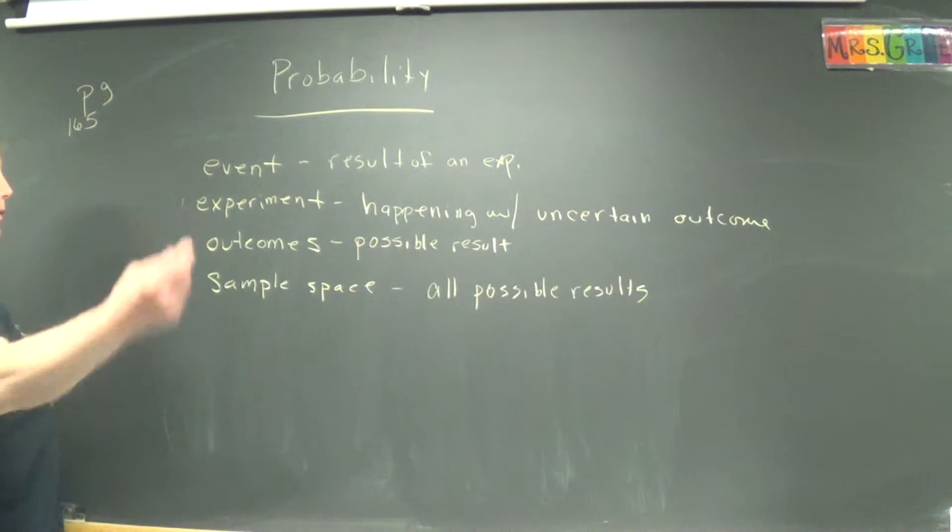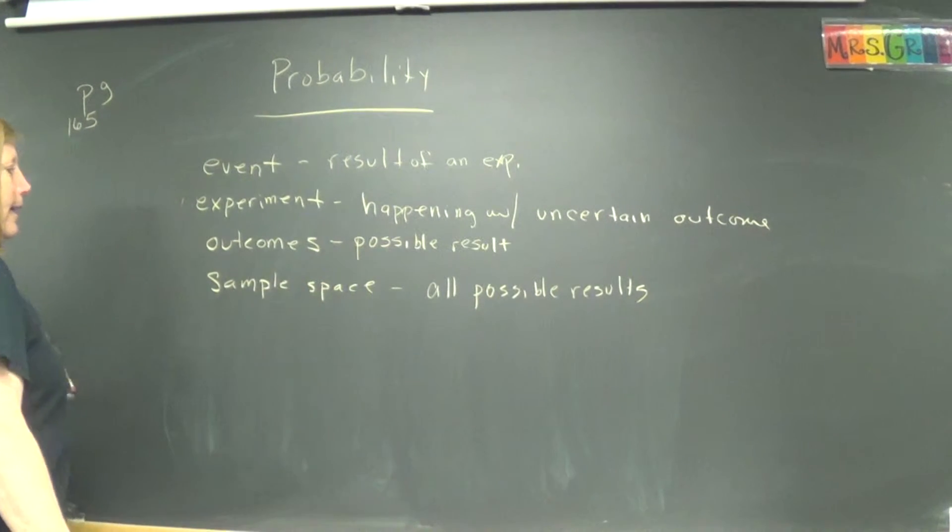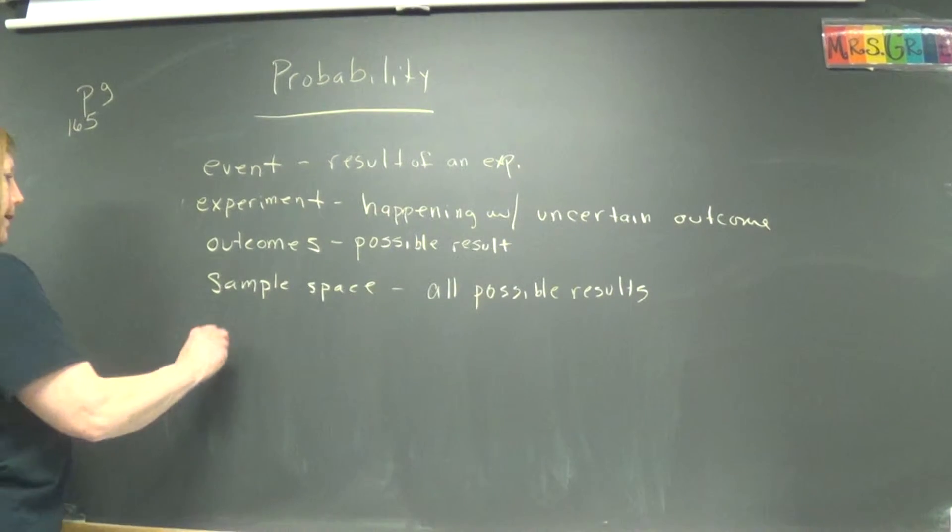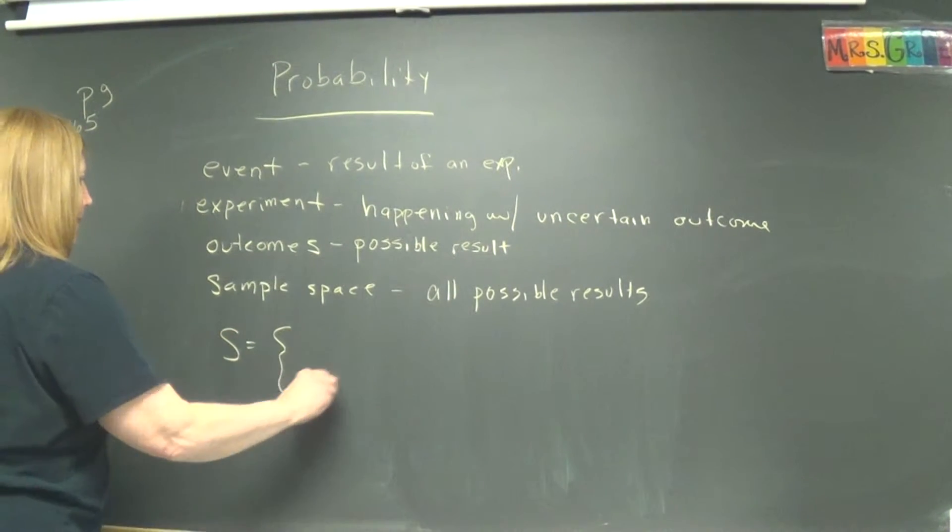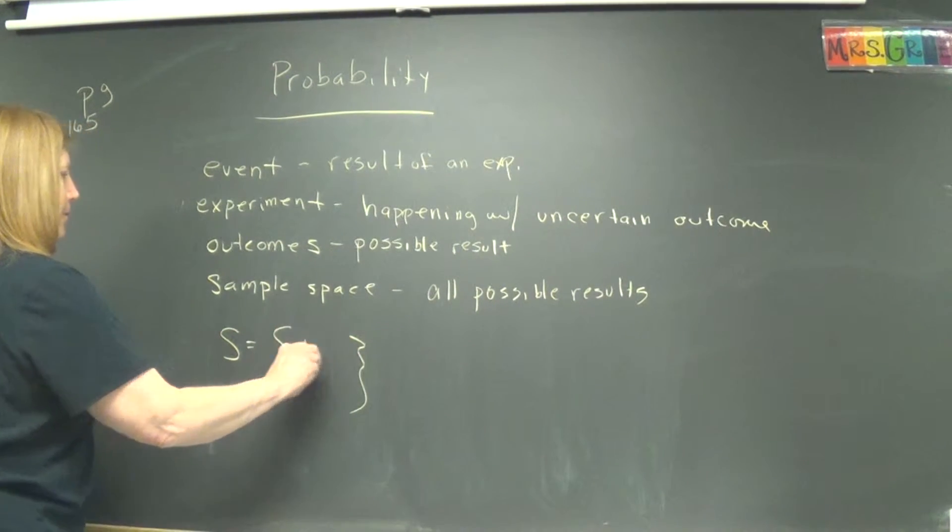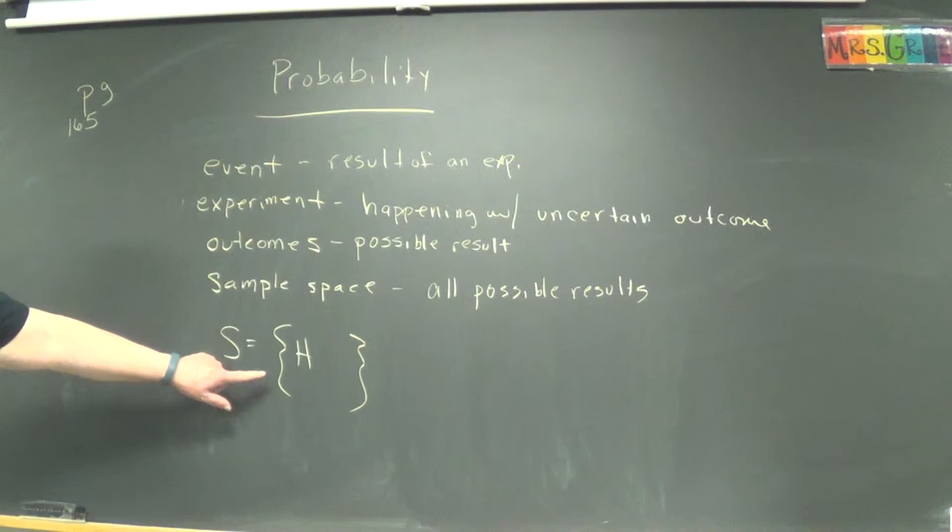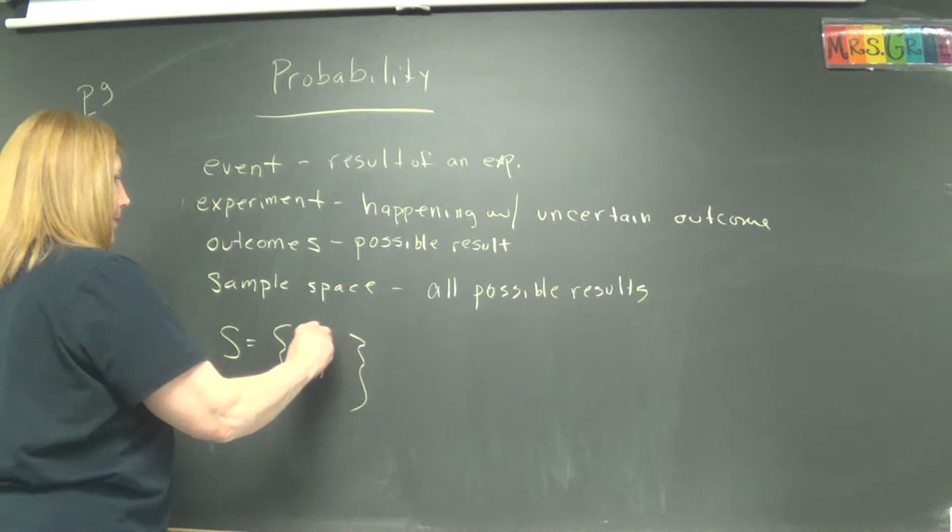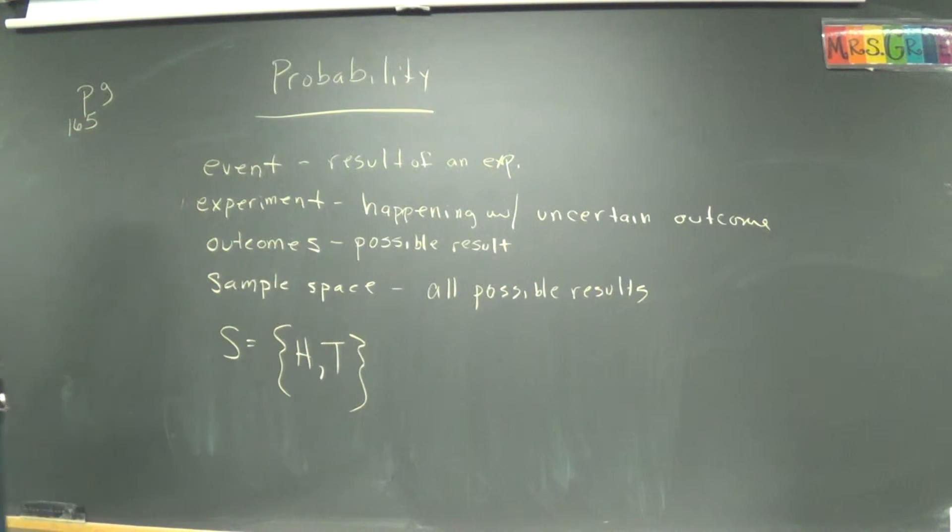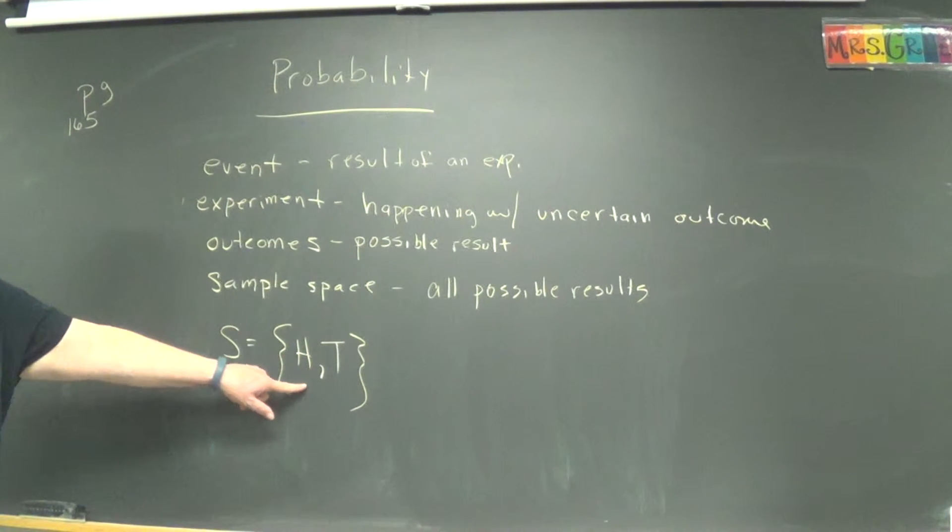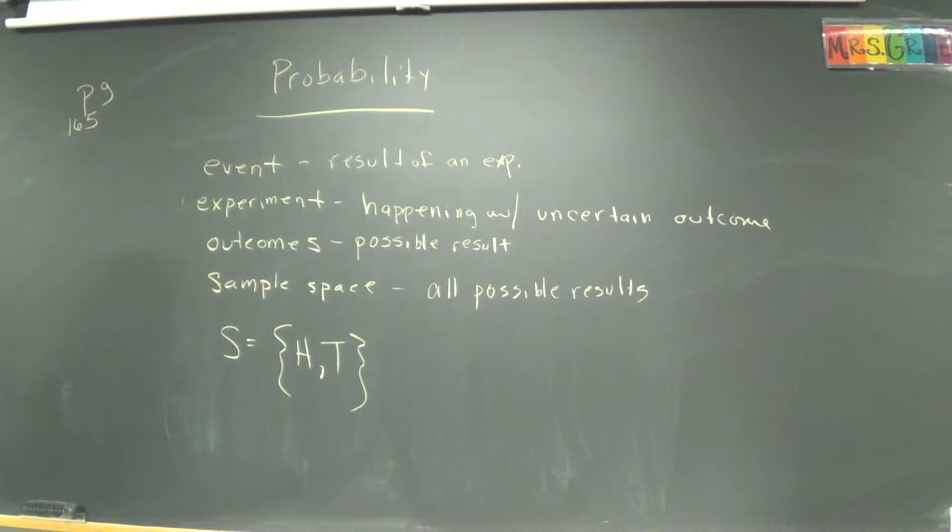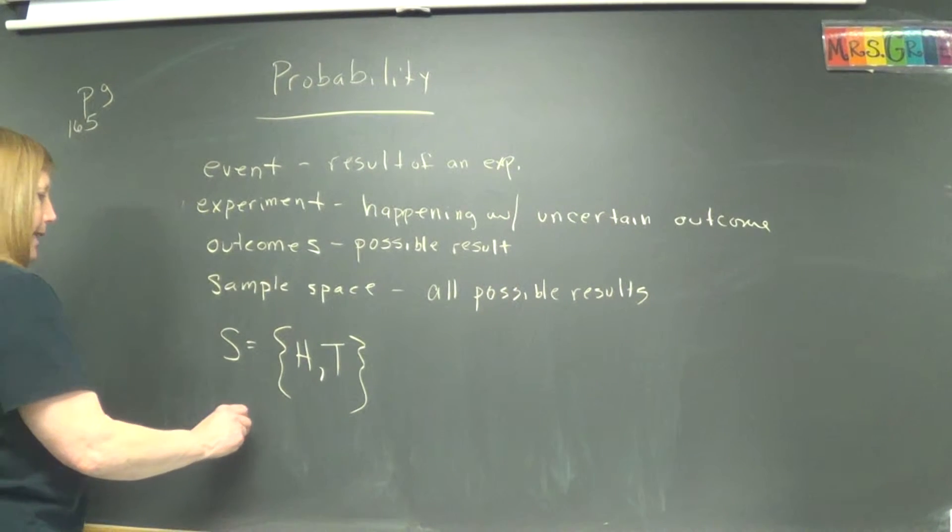All right. These words will explain themselves, except for sample space. You'll understand them because of the sentences that we have. So I'm going to perform an experiment, and I'm going to flip a coin. So what is the sample space? It is written with these braces, and all the possible outcomes are written with a comma separating them. So the sample space for flipping a coin is heads, tails.